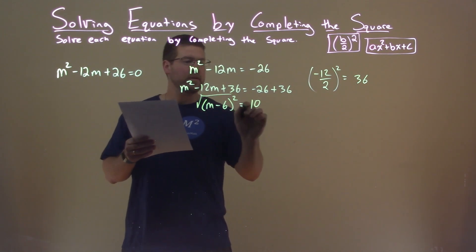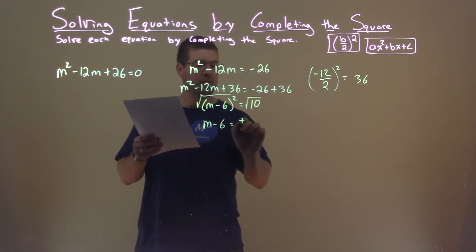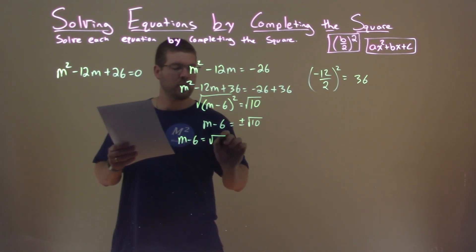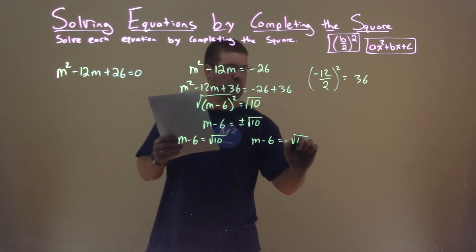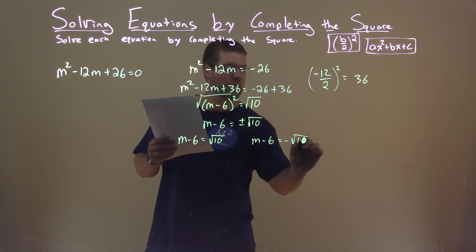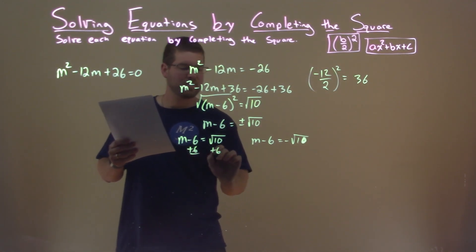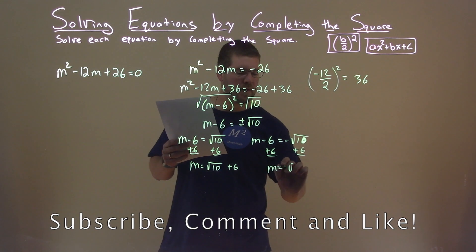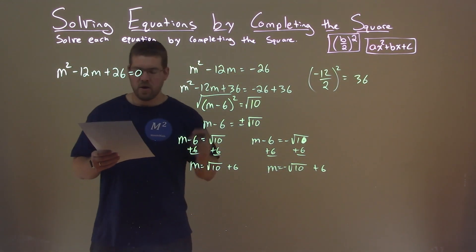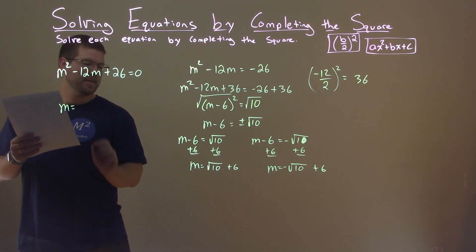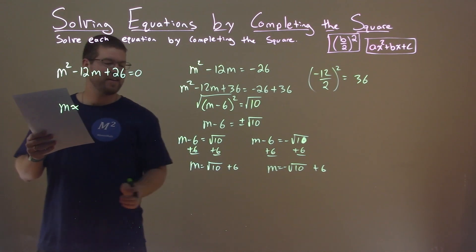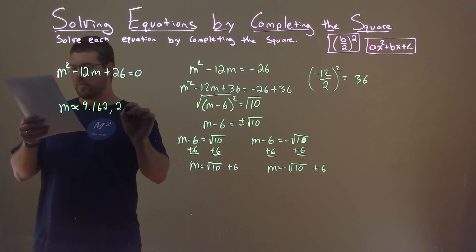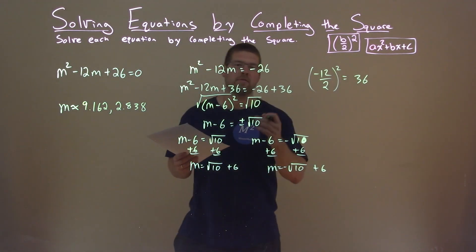We can take the square root of both sides, leaving M minus 6 equals plus or minus the square root of 10. Breaking this into two equations: M minus 6 equals positive square root of 10, and M minus 6 equals negative square root of 10. Adding 6 to both sides: M equals square root of 10 plus 6, and M equals negative square root of 10 plus 6. Those decimals are approximately M equals 9.162 and 2.838, and those are our final answers.